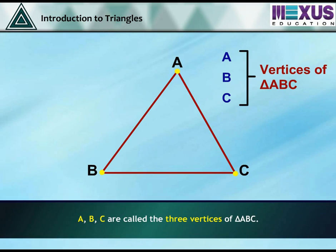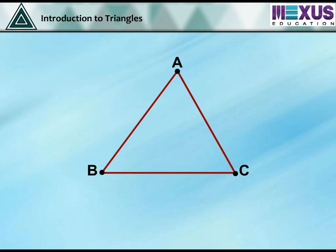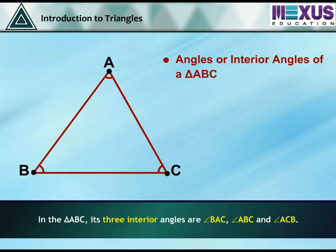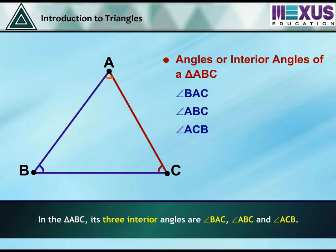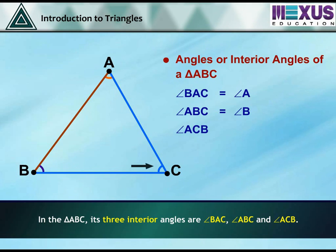Thus, A, B and C are called the three vertices of triangle ABC. Every triangle has three angles. In triangle ABC, its three interior angles are angle BAC, angle ABC and angle ACB. Angle BAC can also be written as angle A, angle ABC as angle B, and angle ACB as angle C. All these represent the interior angles of triangle ABC.